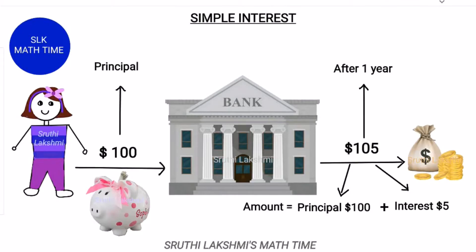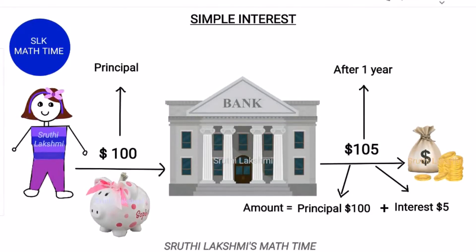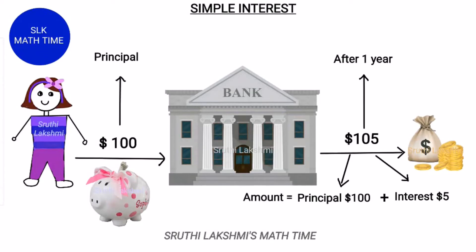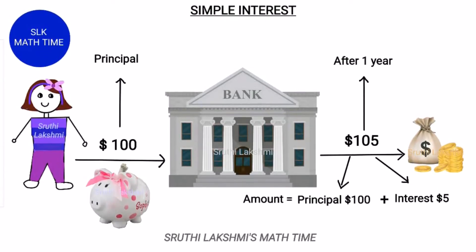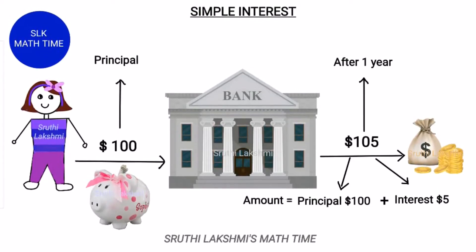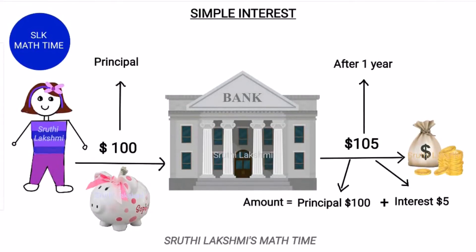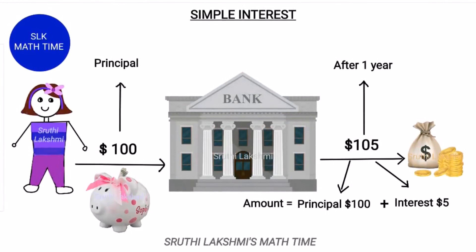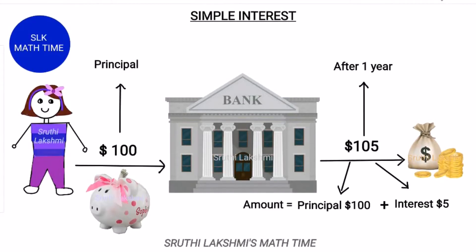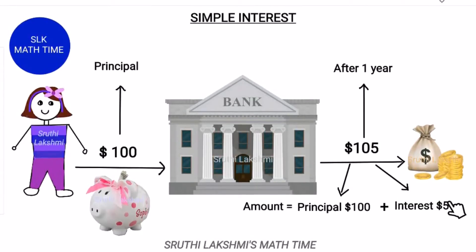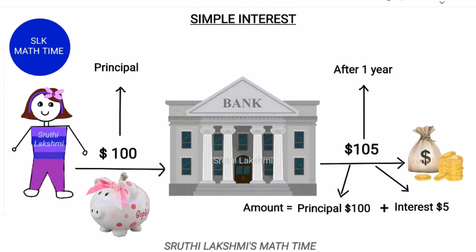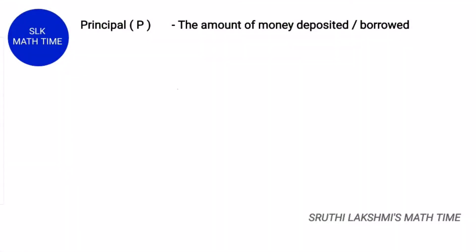A bank will pay you interest if you put your money in deposit. Depositing your money in the bank allows them to lend money to other people, so they pay you interest for that service. That's why Sophia got an interest of $5. The principal is the amount of money that is being deposited or borrowed, and it is denoted by the letter P.